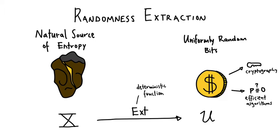We know that in many cases, randomness gives us randomized algorithms that are much more efficient than their deterministic counterparts. For example, testing identity of polynomials. And in many cases, the gaps between what you can do with a randomized algorithm versus deterministically in sublinear settings are provably there — there are provable gaps. So randomness is incredibly important. In all of these cases, we model randomness given to our algorithms or cryptographic schemes as uniformly random bits.